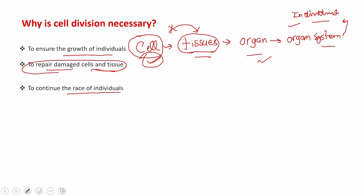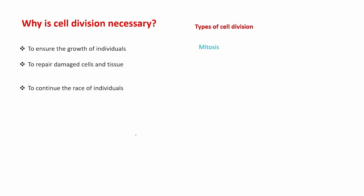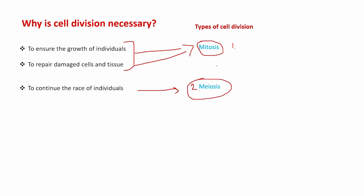Here we can classify the types of cell divisions taking place in human bodies or in individuals. The first type is mitosis, which ensures the growth of individuals and is necessary to repair damaged cells. The second type is meiosis, which is necessary to continue the race of individual animals and human beings. In today's lecture, we will see these two types of cell divisions in detail, and then we will make a comparison between both. We will start by studying mitosis.